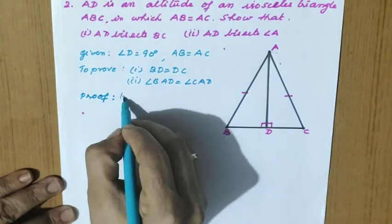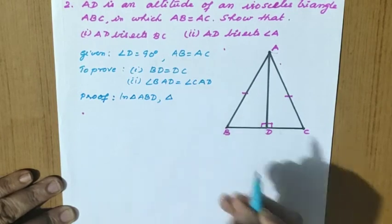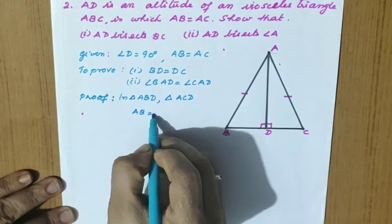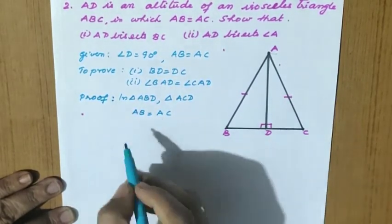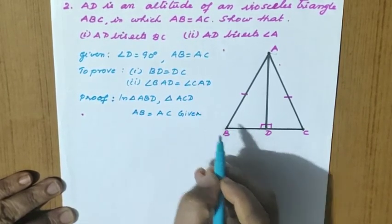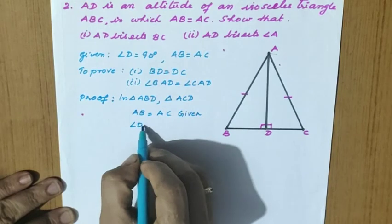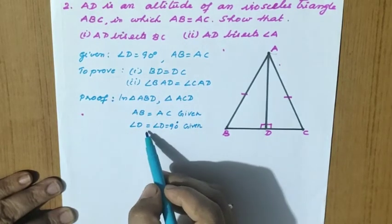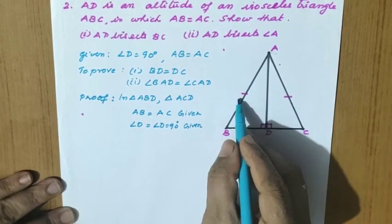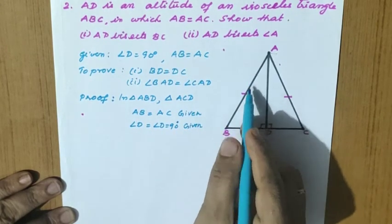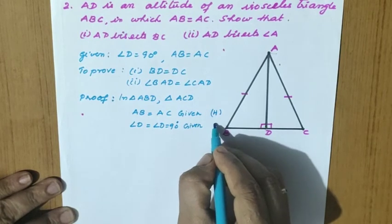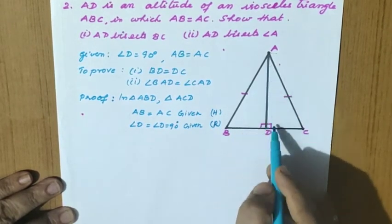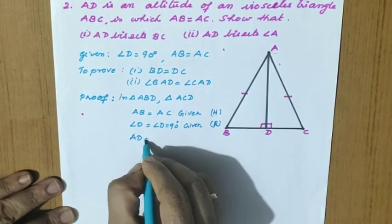In triangle ABD and triangle ACD: AB equal to AC — the equal side already marked, that is given. Next, angle D equal to angle D equal to 90 degrees, that is also given. Since angle D is 90 degrees, the side AB opposite to 90 degrees is the hypotenuse. We have a right angle and a hypotenuse, so we need one more side for RHS criteria.